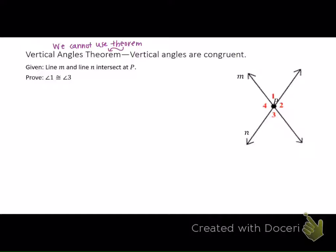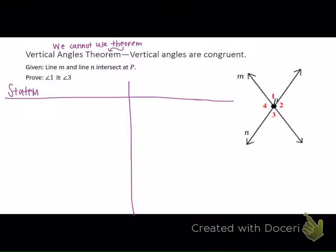So you're going to start with your two columns here. Again, if you're proving that theorem, you can't use the vertical angle theorem. But if we were not proving the vertical angle theorem, you could use it in a different proof. So we're proving that theorem, so you cannot use that word. Now, we've done this proof before — this is not a new proof. So we're going to start with this one, and then we'll get through some of the other ones here.